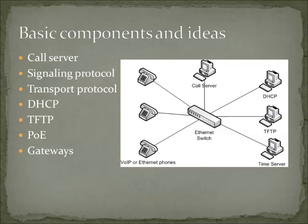The device that controls everything in a Voice over IP infrastructure is the call server. Phones, when they come up, talk to the call server, they register, and they also use the call server to make phone calls. Another important feature of a VoIP network is Power over Ethernet. Modern switches provide power to many devices — access points are one example. Phones certainly prefer Power over Ethernet so we don't have to worry about power adapters and things like that.